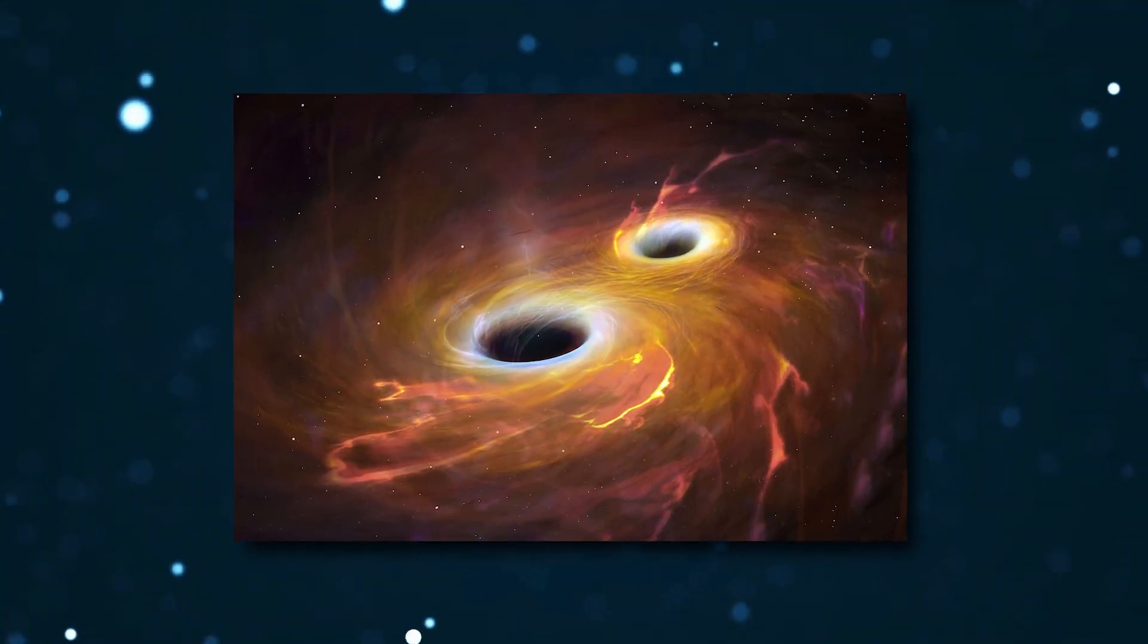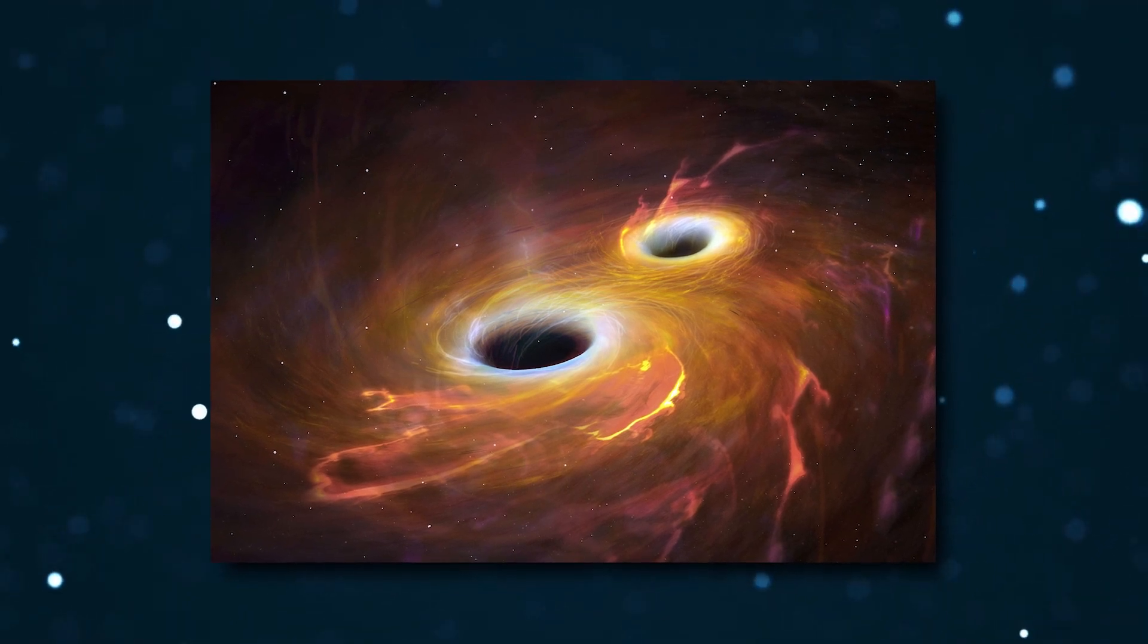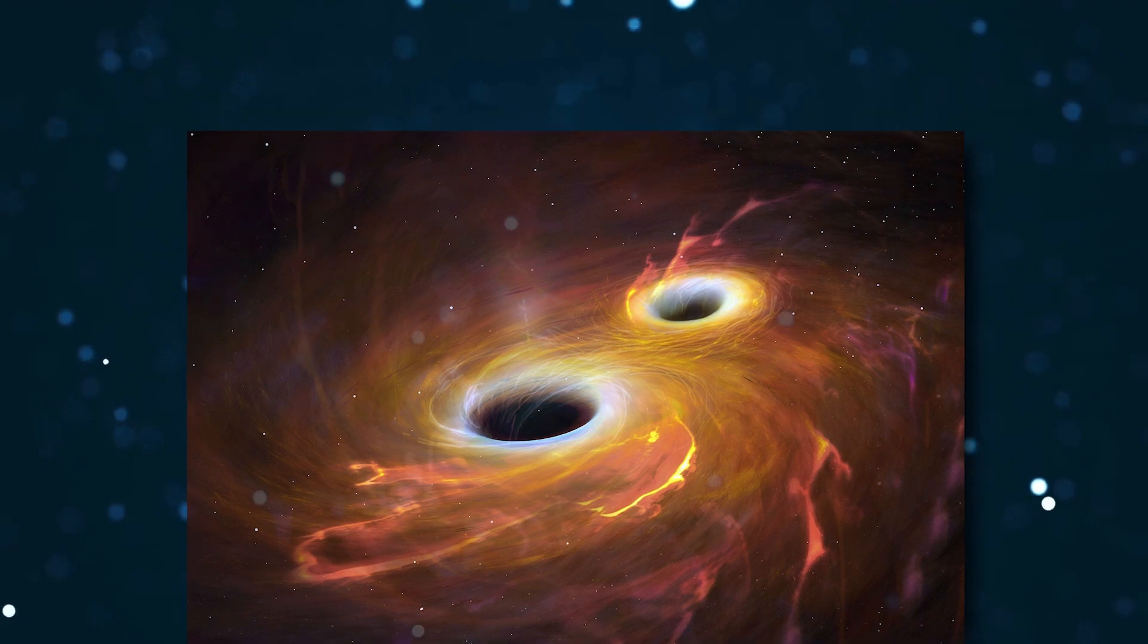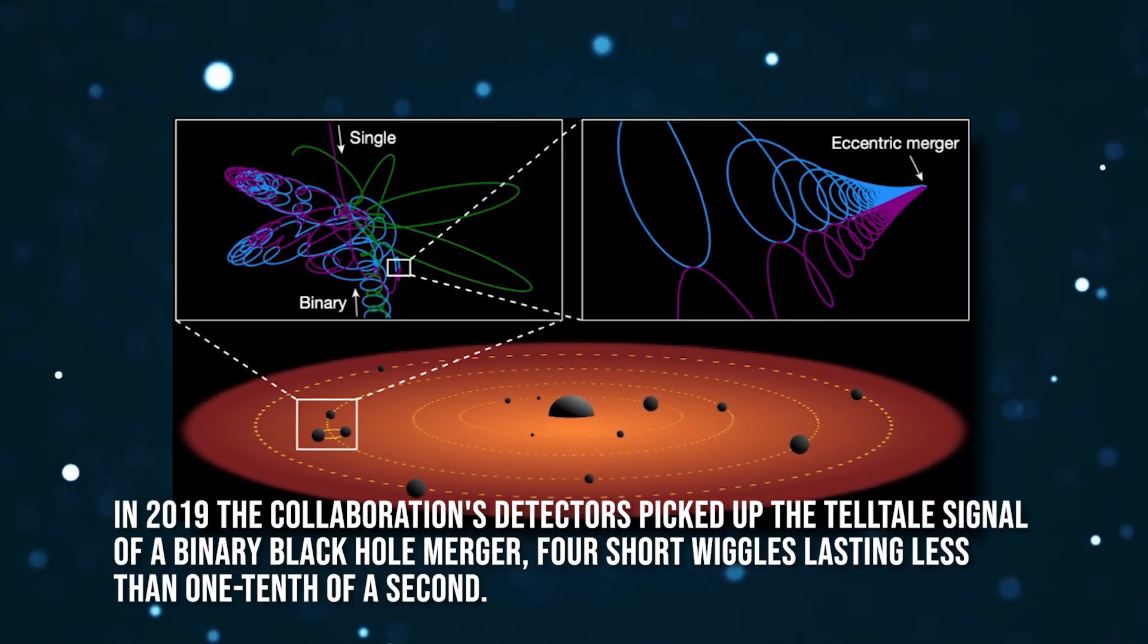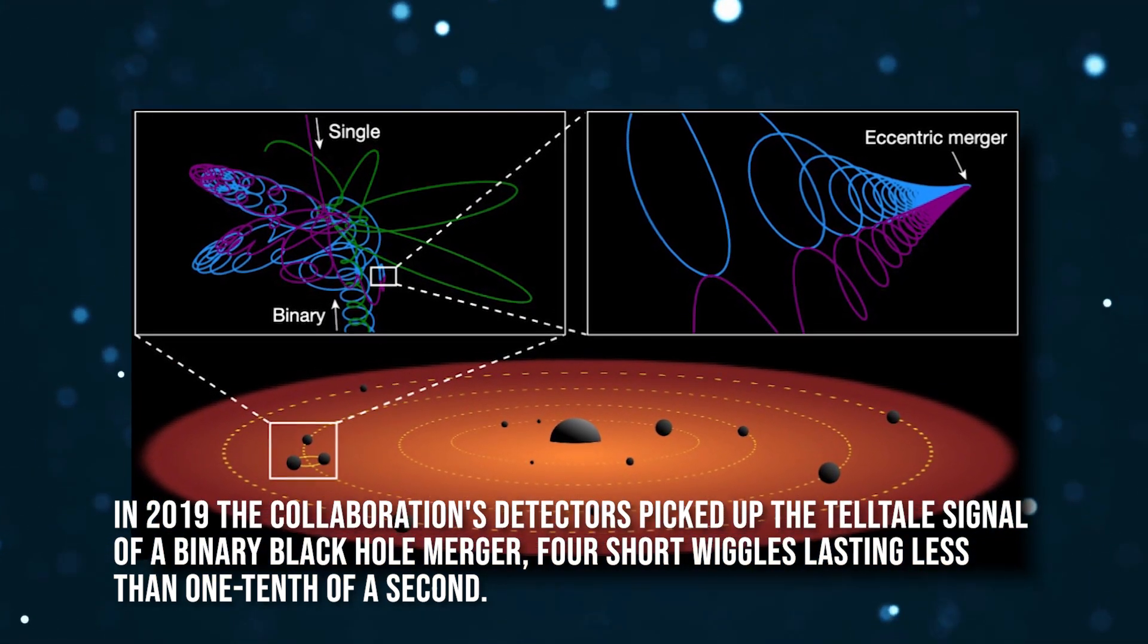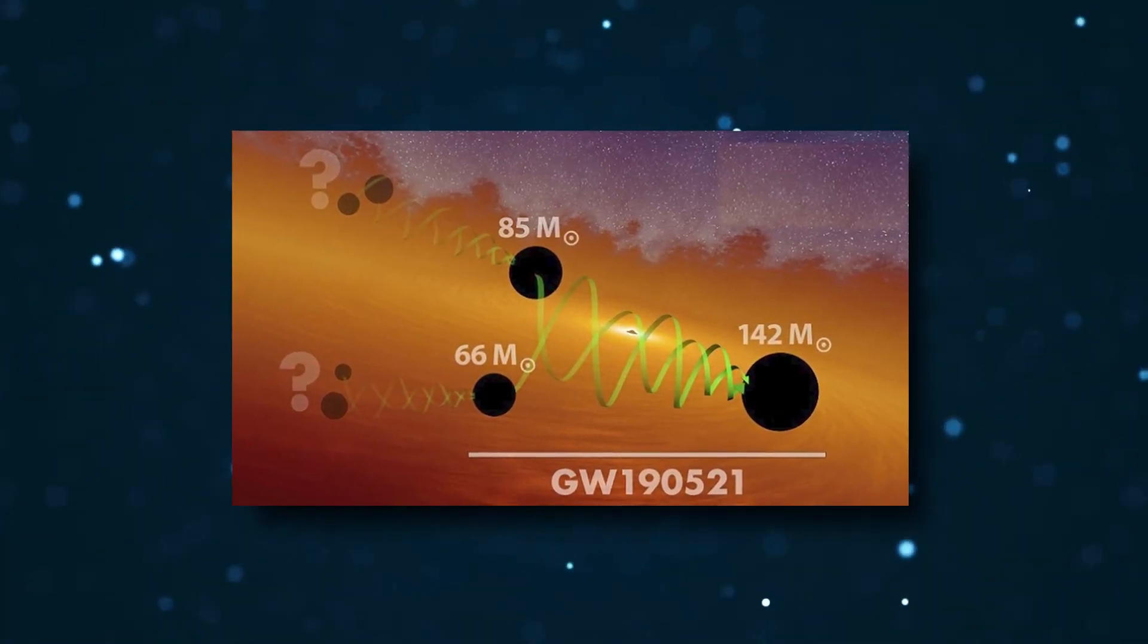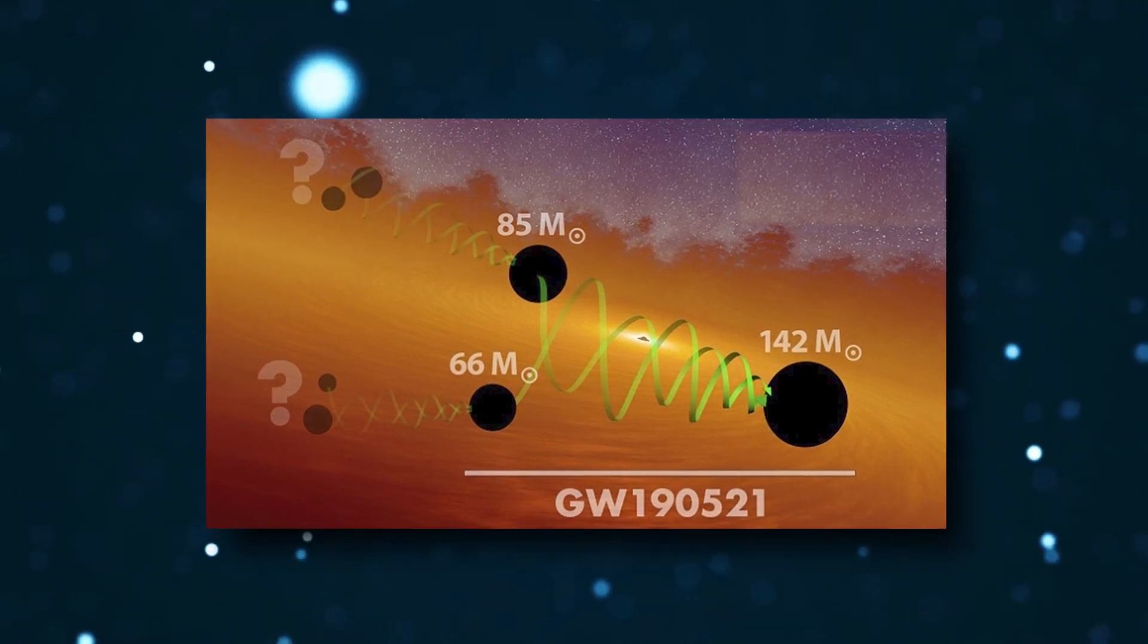Even weirder, the two black holes that merged were locked in an elliptical, rather than circular orbit, and their axes of spin were tipped far more than usual compared to those orbits. In 2019, the collaboration's detectors picked up the telltale signal of a binary black hole merger, four short wiggles lasting less than one-tenth of a second. The shorter the signal, the more massive the black holes that are merging. In this case, 85 and 66 solar masses respectively.